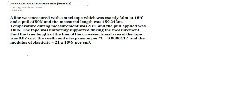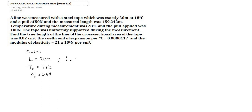In this tutorial we have a question: a line was measured using a steel tape which was exactly 30 meters. The standard length of the steel tape is 30 meters at 18 degrees centigrade. The standard pull of the tape is 50 newtons, and the measured length LM was 459.242 meters.